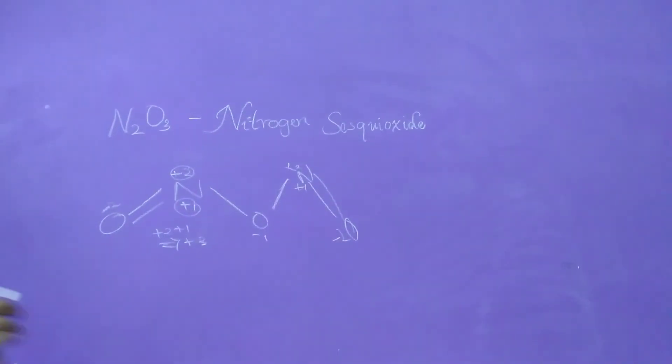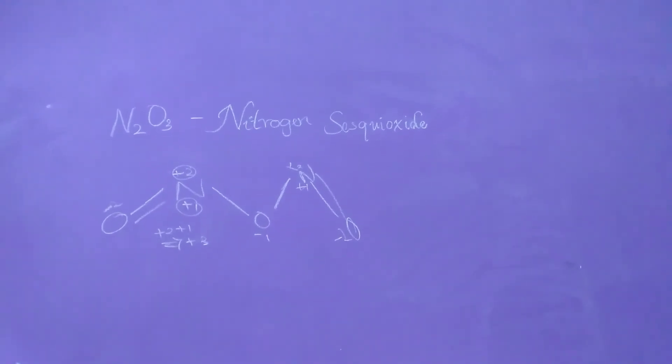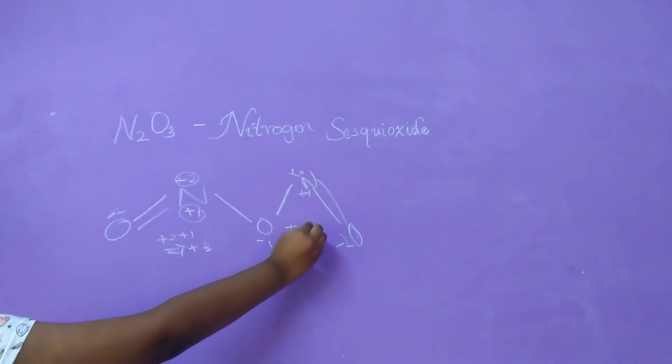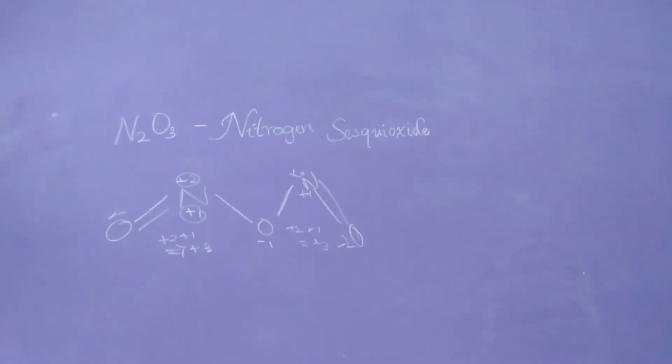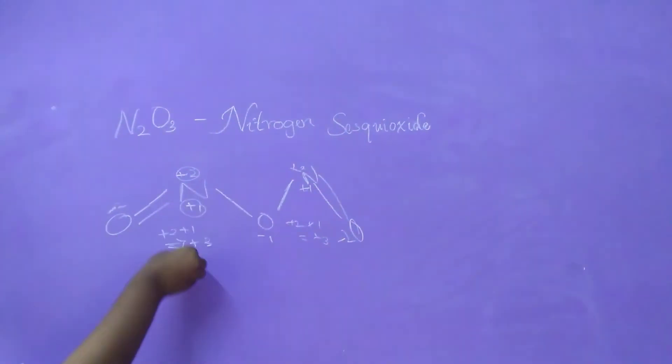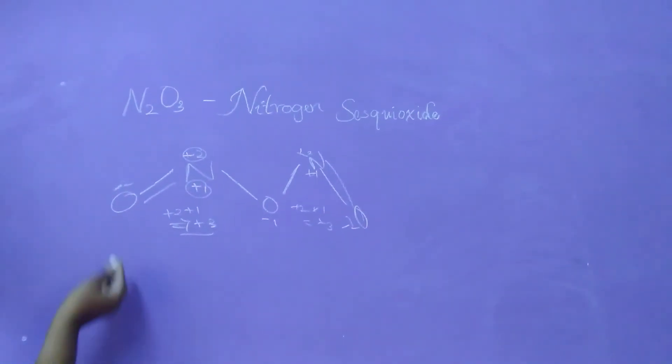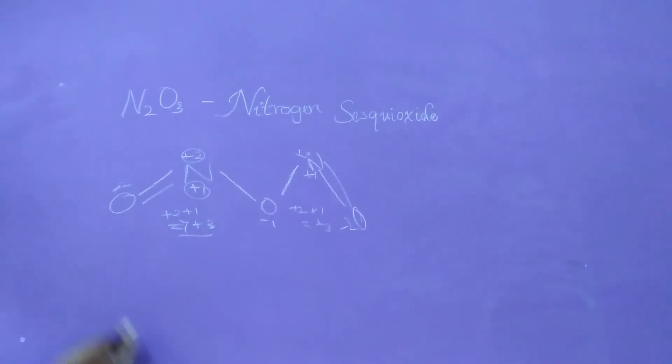Because oxygen is more electronegative than nitrogen. And as well as here also, we have to add plus 2, plus 1. We will get plus 3. So here one nitrogen is getting plus 3, another nitrogen is also getting plus 3. So if you take two nitrogen together, you will get plus 6.